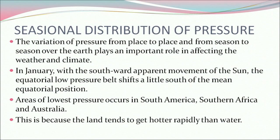Now let's study the seasonal distribution of pressure. The variation of pressure from place to place and season to season plays an important role in affecting the weather and climate. In January, with the southward apparent movement of the sun, the equatorial low pressure belt shifts slightly south of the mean equatorial position. Areas of lowest pressure occur in South America, southern Africa, and Australia, because land tends to get hotter rapidly than water.